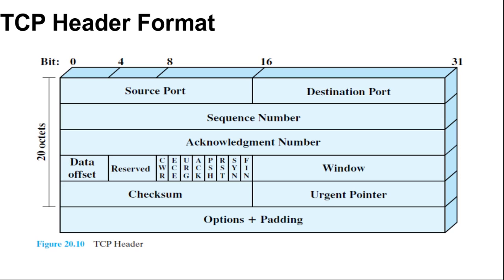For more about sequence number and acknowledgement number: the sequence number and acknowledgement number are bound to octets rather than to entire segments. For example, if a segment contains sequence number 1001 and includes 600 octets of data, the sequence number refers to the first octet in the data field. The next segment in logical order will have sequence number 1601. Thus TCP is logically stream oriented; it accepts a stream of octets from the user, groups them into segments as it sees fit, and numbers each octet in the stream.